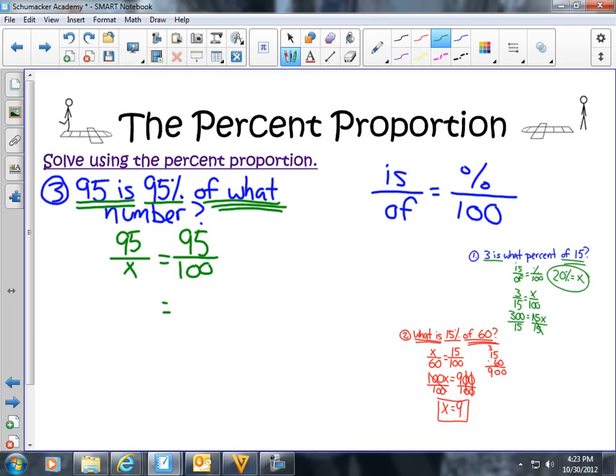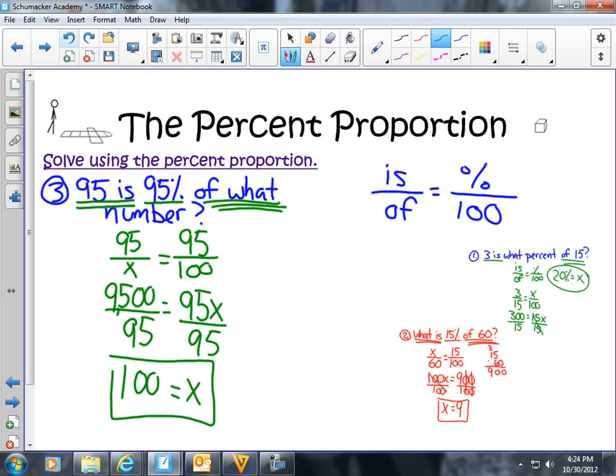Now I can cross multiply. You're going to cross multiply up and over. Always up and over when you're cross multiplying. I'm going to get 95x and then 95 times 100. You can just put 95 hundreds, so 9,500. Now I'm going to divide both sides by 95. When I divide 9,500 divided by 95, I'm going to get 100. And then x is over here. So in this case, 95 is 95% of what number? Well, in this case, the number is 100.